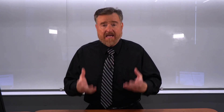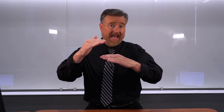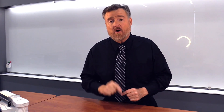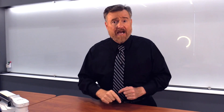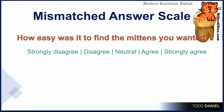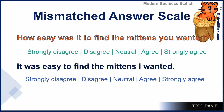Mismatched answer scales occur when the question and the answer options don't line up. This often occurs when someone is using online survey software and allowing the software to just provide the answer options. For example, how easy was it to find the mittens that you wanted? — with the answer options strongly disagree through neutral to strongly agree. Those answer options don't match up to the question. Instead, we could turn the question into a statement: it was easy to find the mittens I wanted, and now the strongly disagree through neutral to strongly agree really makes sense.